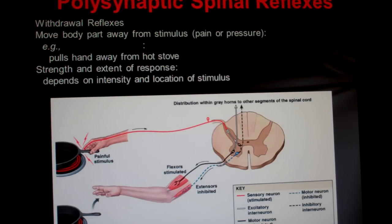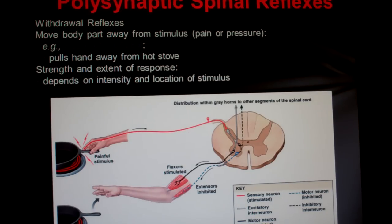This whole process started with the stimulation of free nerve endings in the hand called nociceptors. Nociceptors are small, unmyelinated and lightly myelinated nerve endings that can be found in almost all the tissues throughout the body.